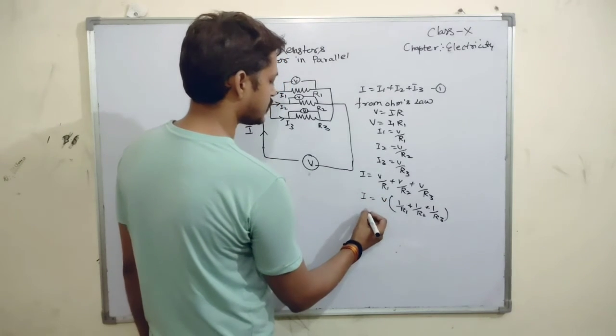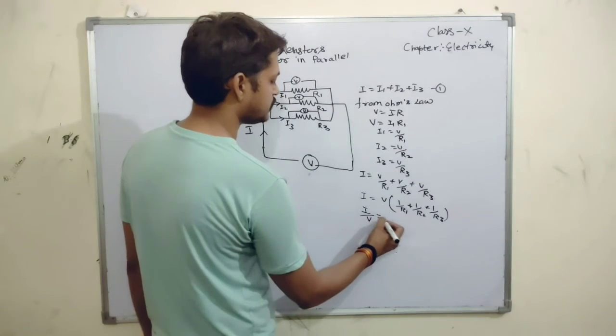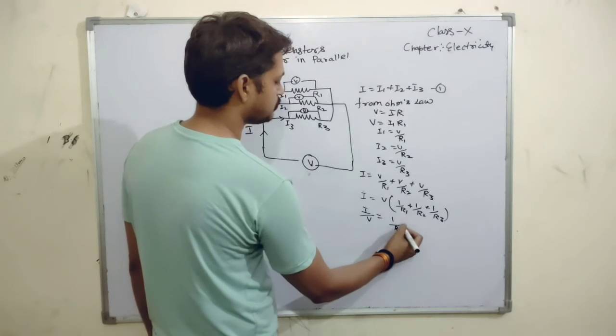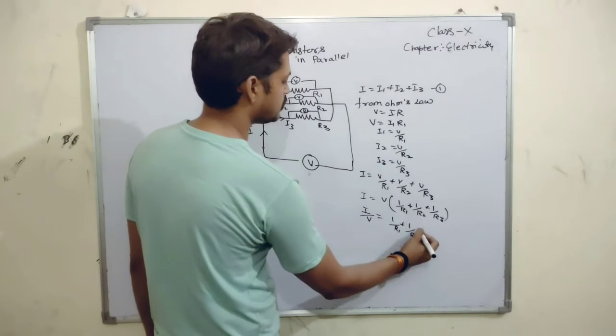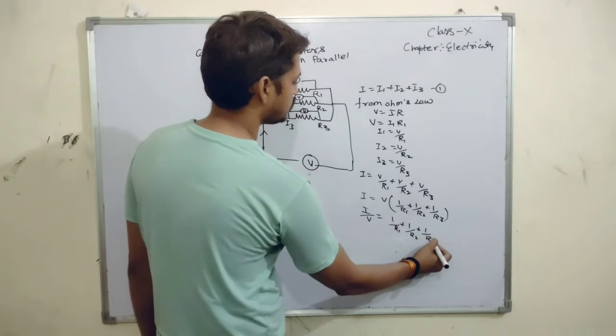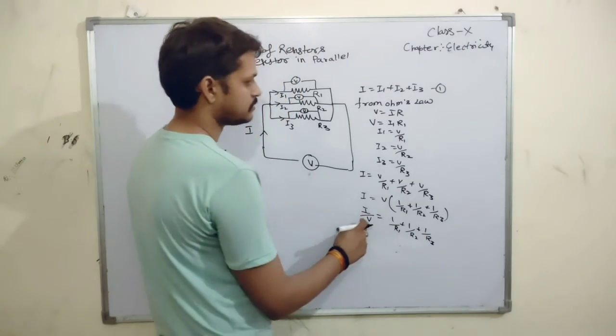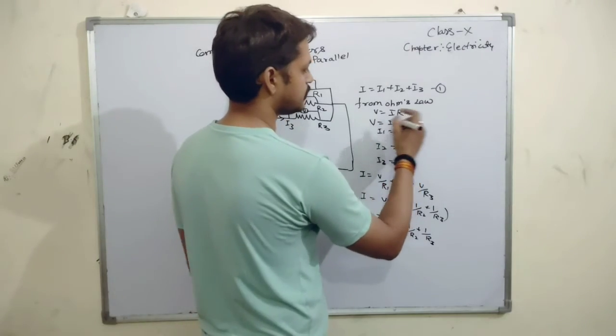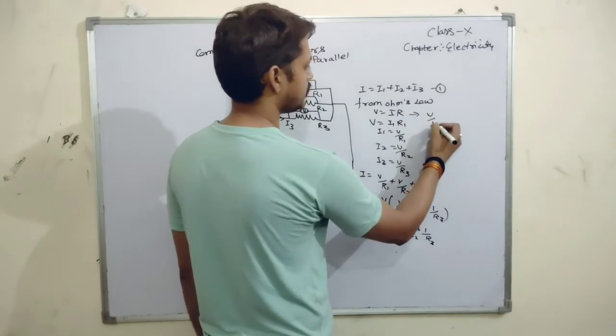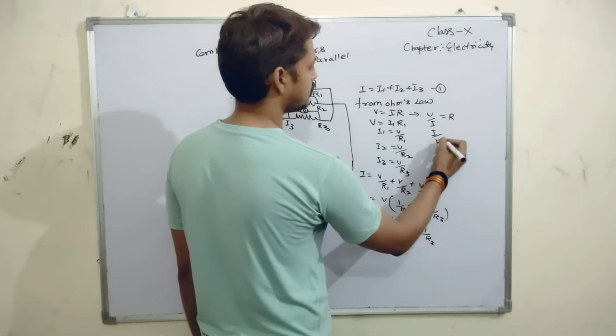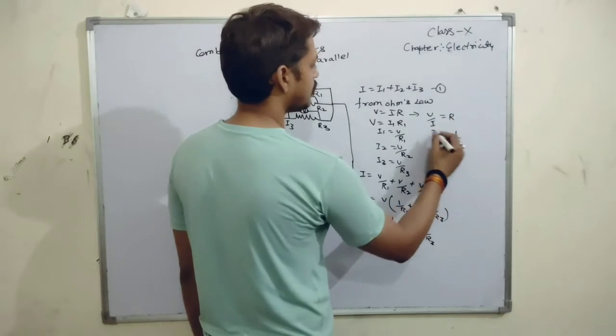This is I. We can take it I to this side. I by V. From here we can also see that V by I is equal to R then I by V is equal to 1 by R.